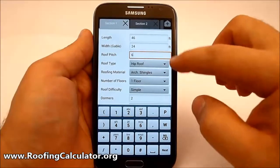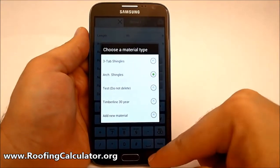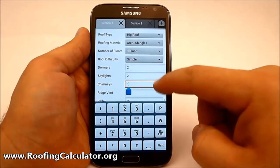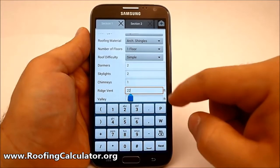Additional information such as type of roofing material, height of building, number of floors, dormers, skylights, chimneys, vent pipes, and ridge vent can be calculated and included in your estimate.